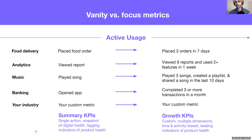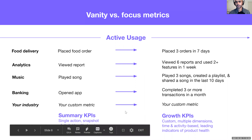There are more examples: banking, music — played three songs, completed three or more transactions in a month or in the last 10 days. Try to think of your products and rethink those metrics, adding a time interval. Feel free to share in the chat, and if you need any help we'll pick examples and dive in.